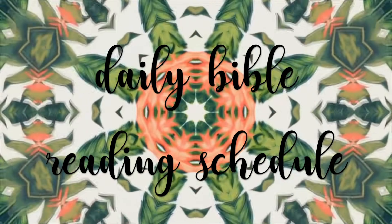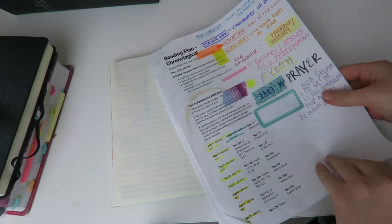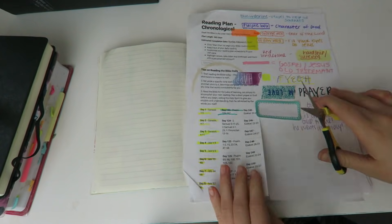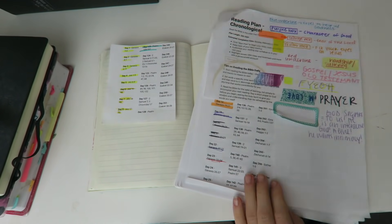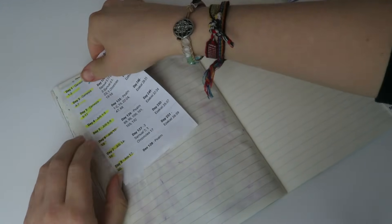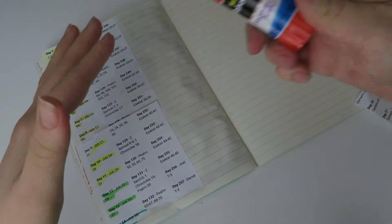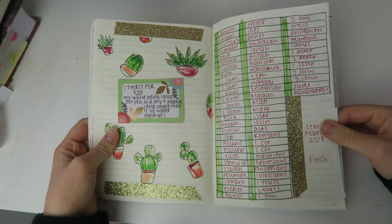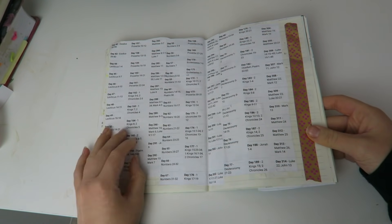So next is actually very similar to the Bible reading schedule one, but this one is daily. So on here, I have already printed out my Bible reading plan. And so what I did was I just cut it out and I glued it into my bullet journal. And then every day that I do my Bible reading, I can cross it off.